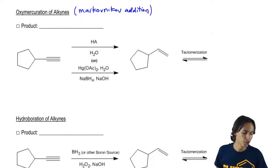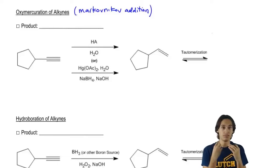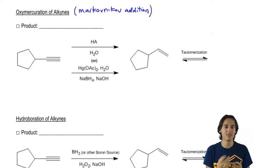Remember that oxymercuration is the most popular way, one of the most popular ways to add a Markovnikov alcohol to a double bond. Well the same thing applies for a triple bond as well.